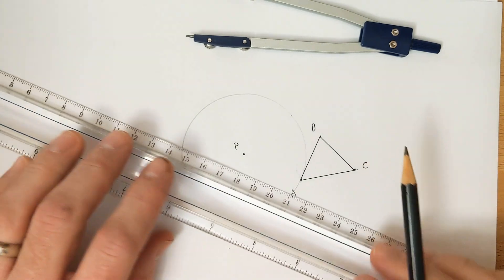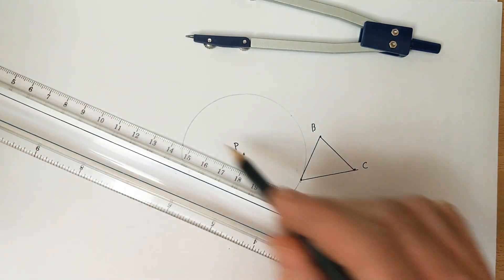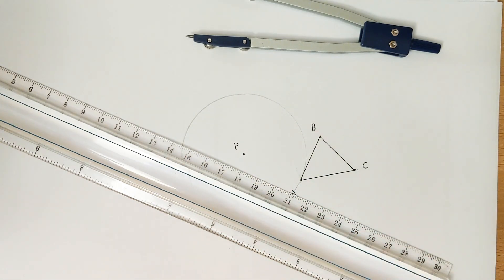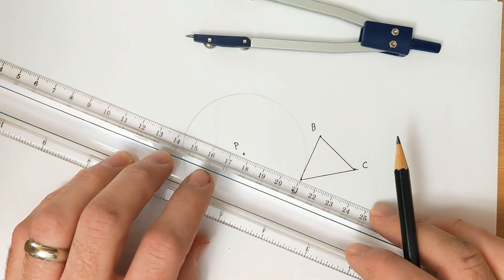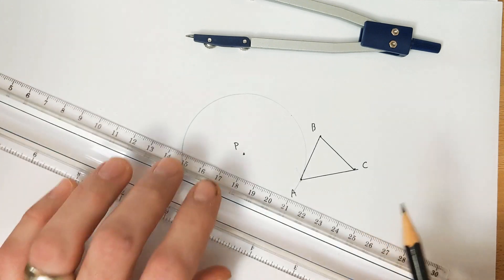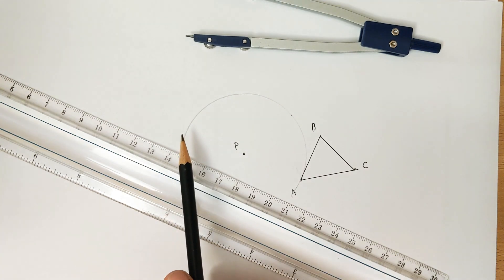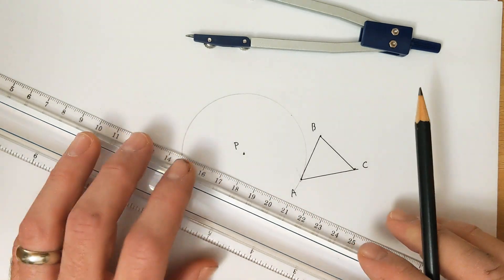If we're doing a 180 degree rotation, all we have to do now is draw the diameter across the circle because a straight line has a measure as an angle of 180 degrees. When we do a rotation, the angle of rotation is always from our pre-image point to our center of rotation to the final image point. So that's the angle we want to create to be 180 degrees.